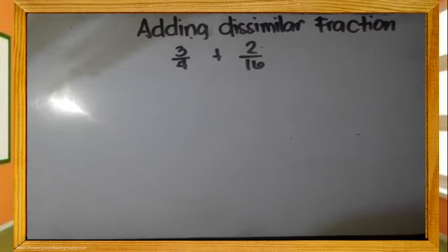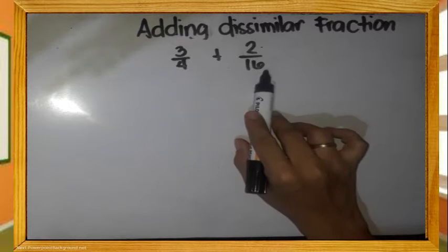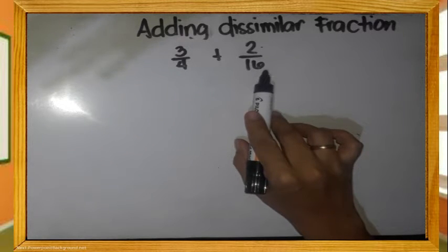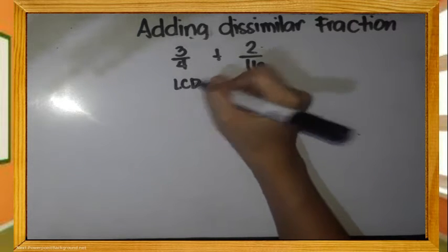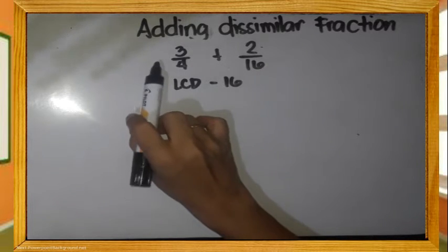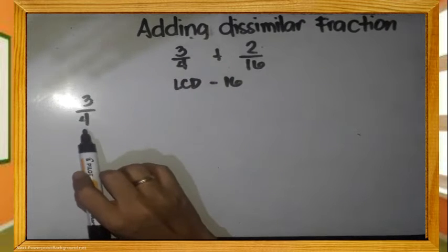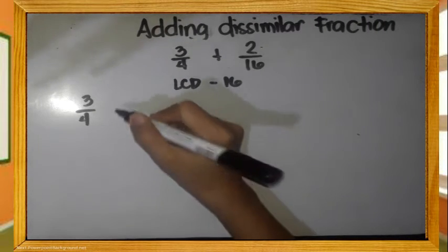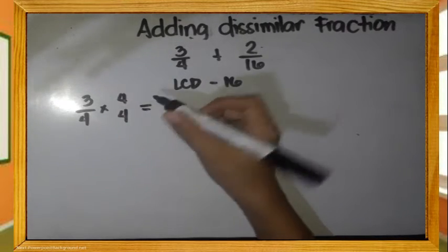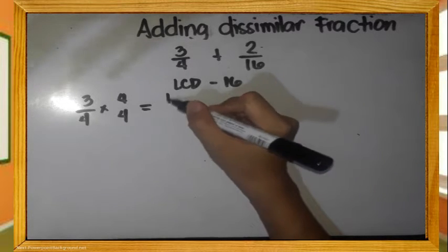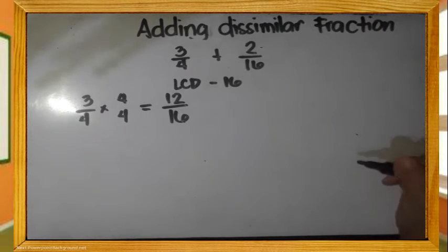Another example — 3 fourths plus 2 sixteenths. Change the fractions to similar fractions first by using the LCD. What is the LCD of 3 fourths and 2 sixteenths? That is 16. Let us rename 3 fourths — what do we multiply by 4 to get 16? Multiply numerator and denominator by 4. So 3 times 4 is 12, and 4 times 4 is 16.